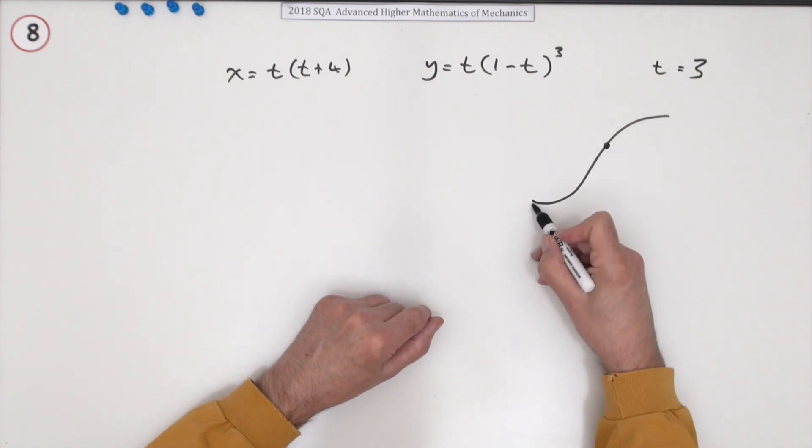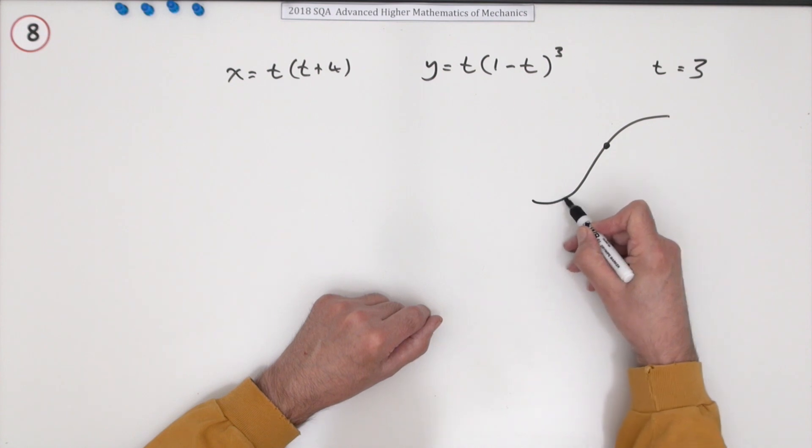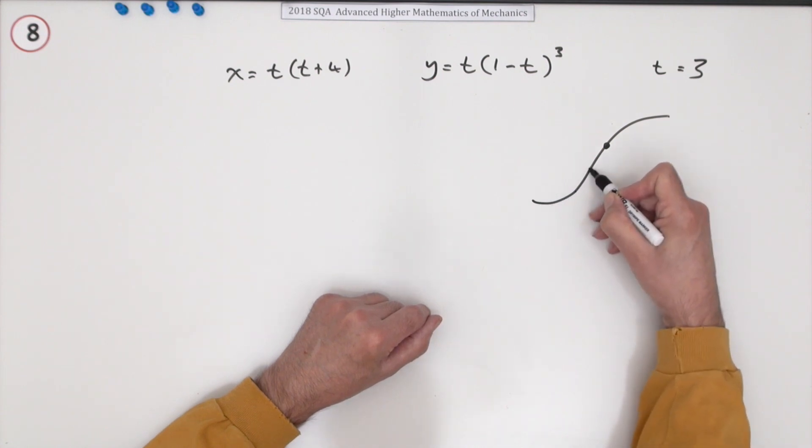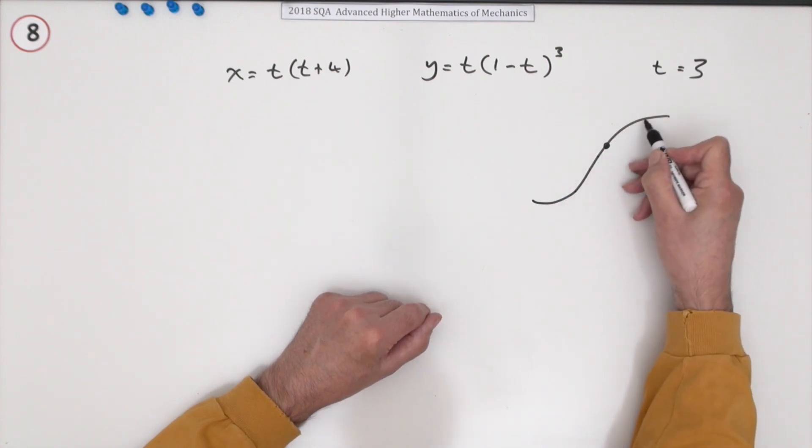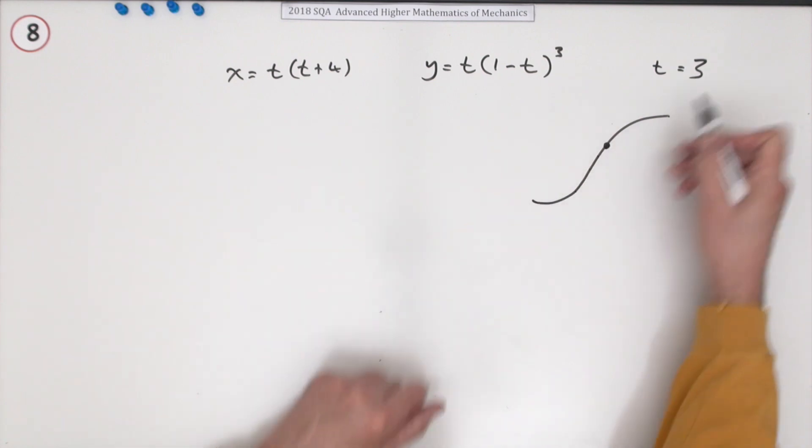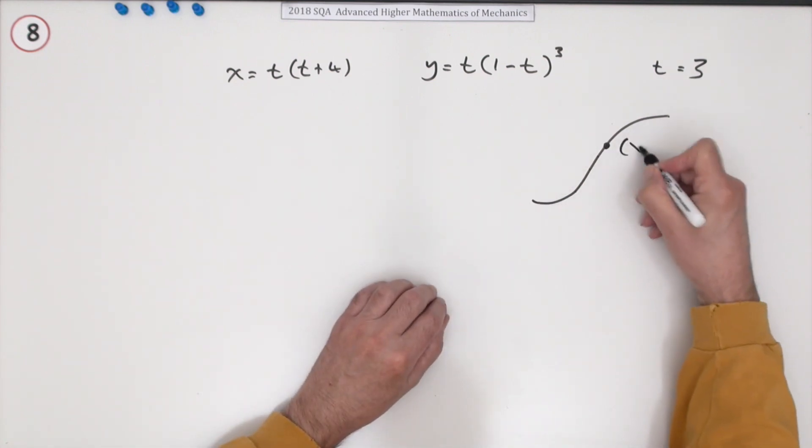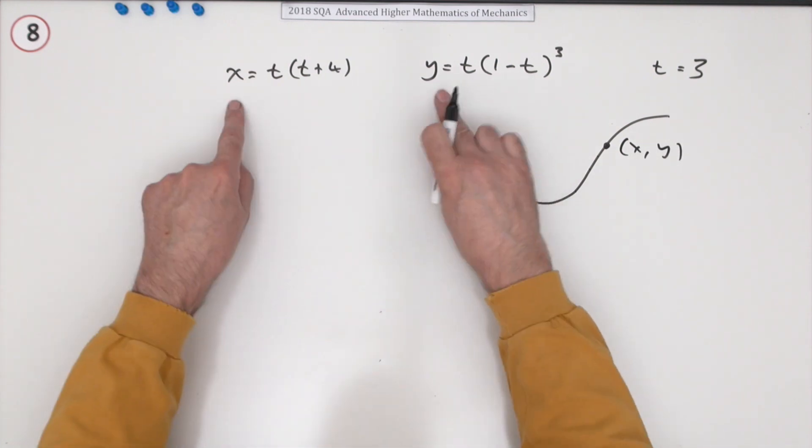So its position can be described simply by saying how long has this been moving for. By this time it's been moving for three seconds, so x and y give the position of the point.